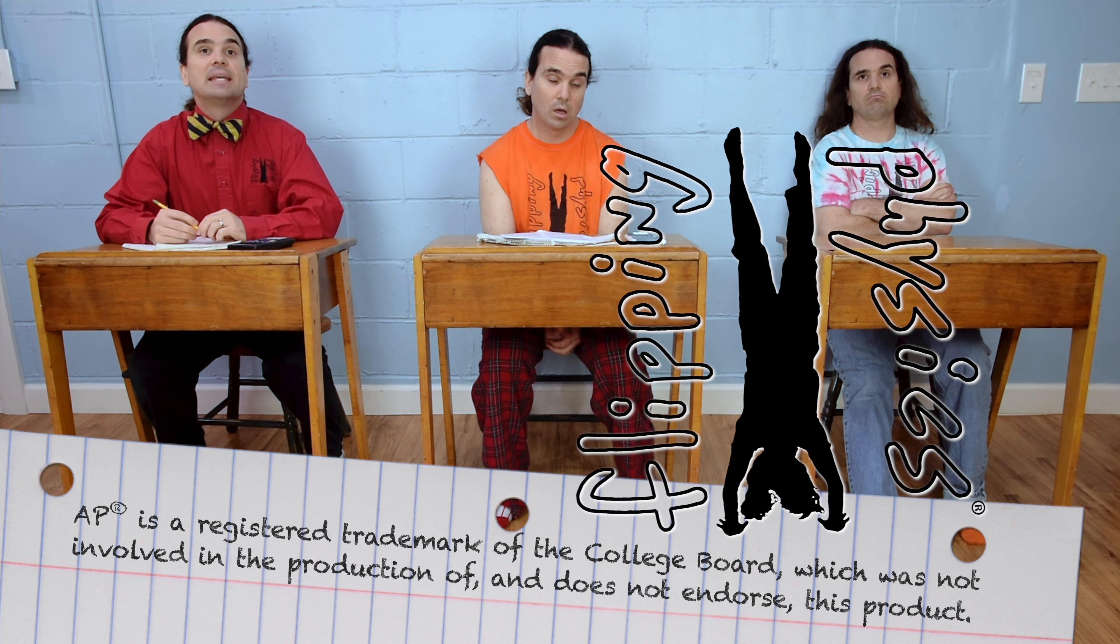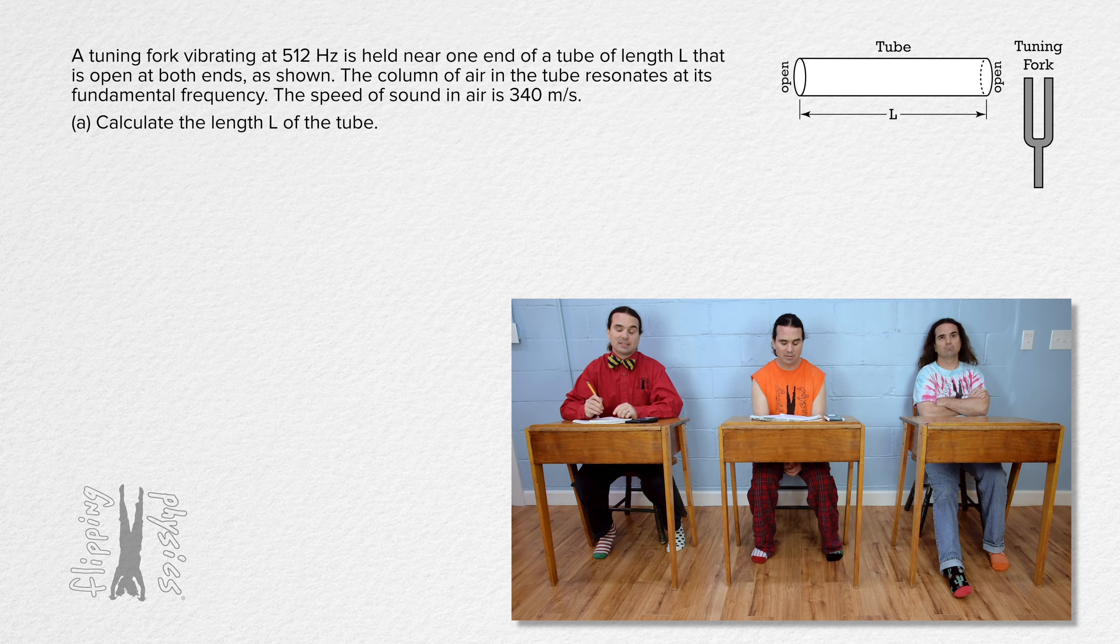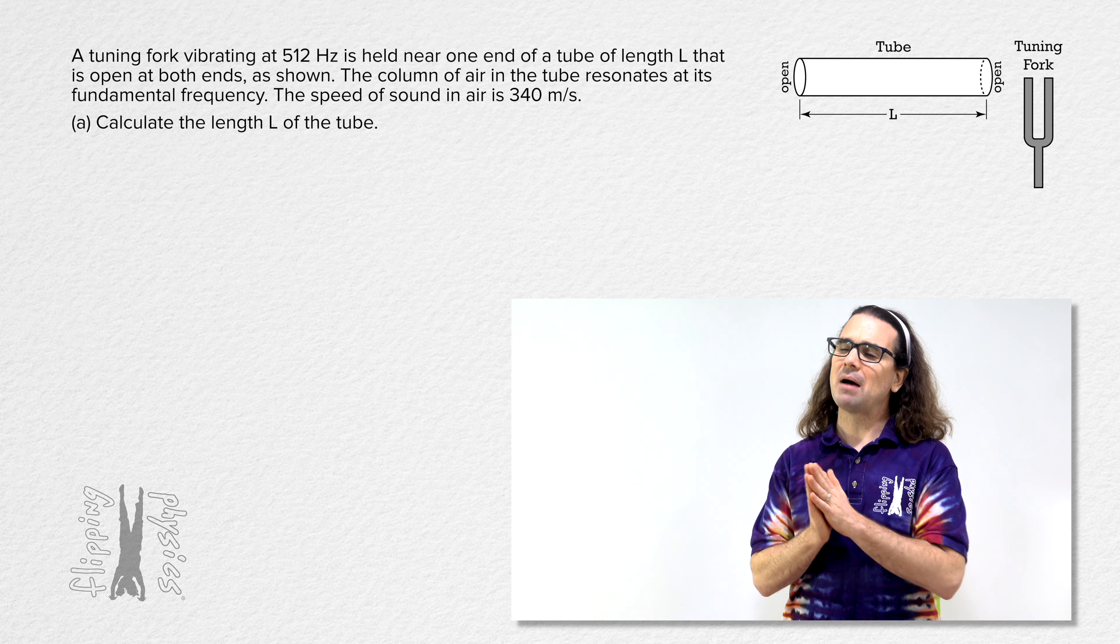Flippin' physics! A tuning fork vibrating at 512 hertz is held near one end of a tube of length L that is open at both ends as shown. The column of air in the tube resonates at its fundamental frequency. The speed of sound in air is 340 meters per second. Part A, calculate the length L of the tube. Thank you, Bobby.